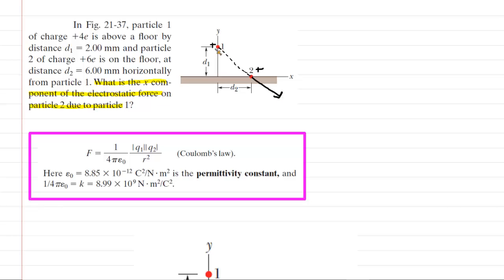Now, of course, particle 1 also experiences a repulsive force, but the question's not asking us anything about that particular repulsive force. They want the x-component of the repulsive force on particle 2.